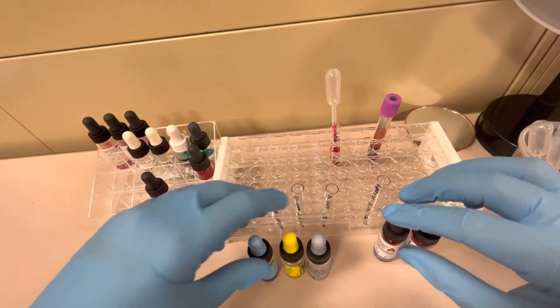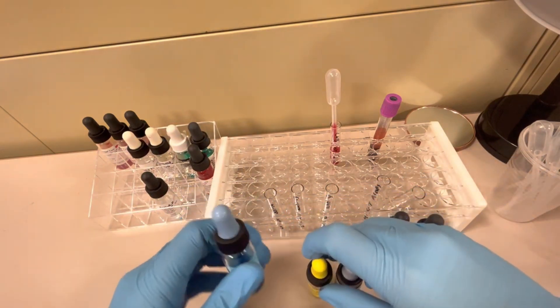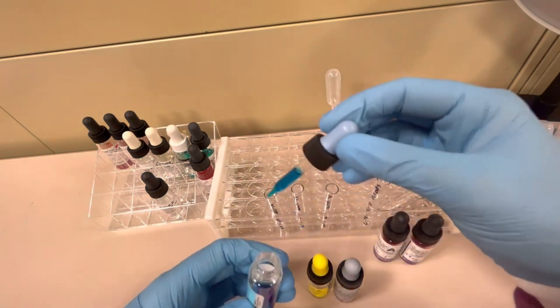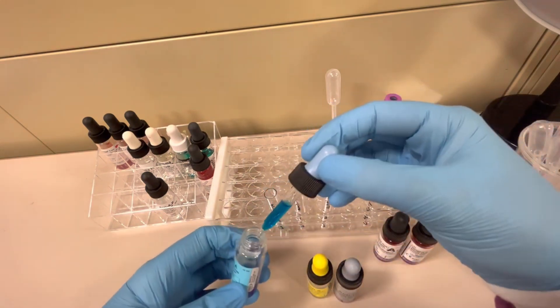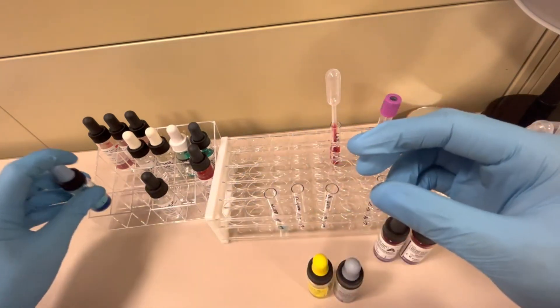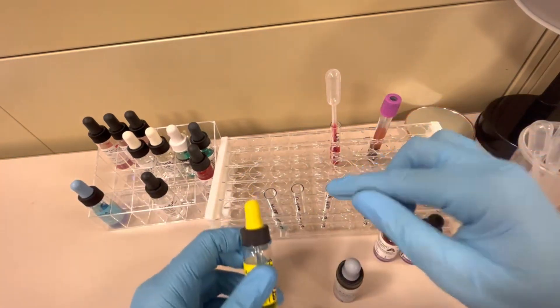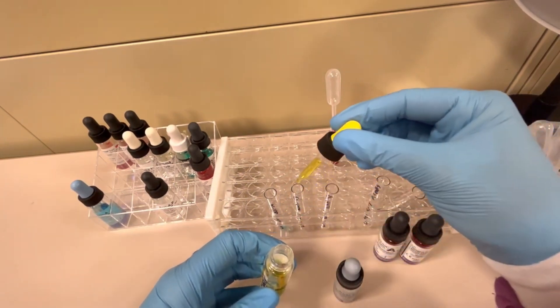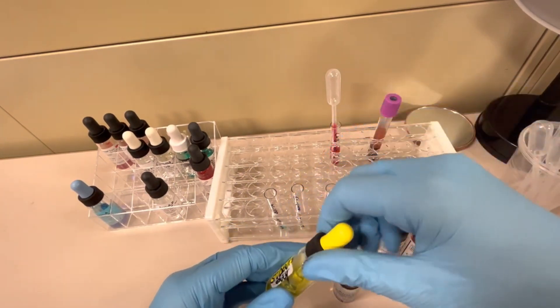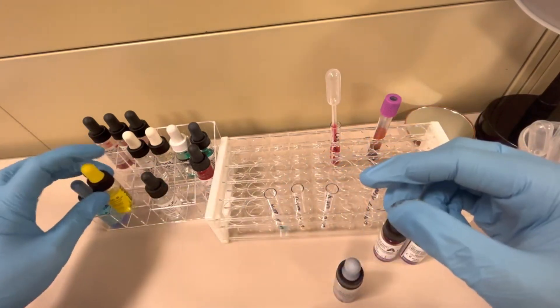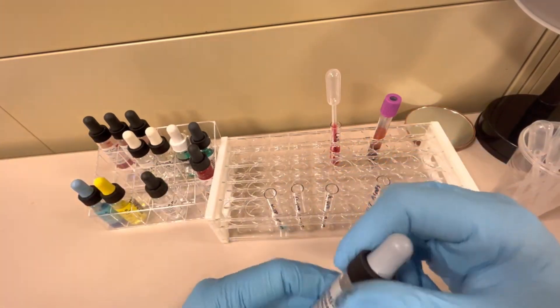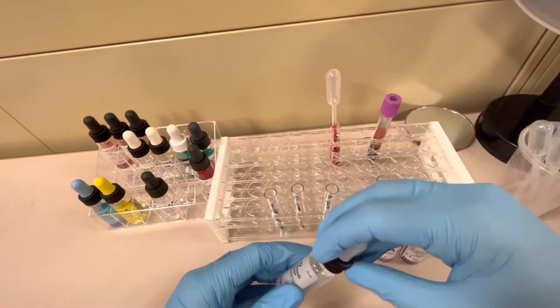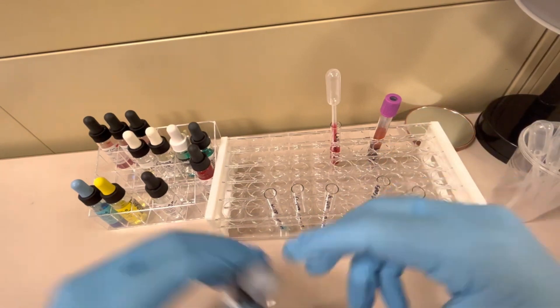The first thing that you're going to do is in the first tube here, which is labeled Anti-A, you guessed it, we're going to put Anti-A in there. We're going to put one drop of Anti-A. I'm going to close the vial and put it back in our blood bank rack. In the Anti-B tube, we're going to put one drop of the Anti-B reagent into that Anti-B tube. And then I'm going to take my Anti-D reagent and put one drop in the Anti-D test tube.